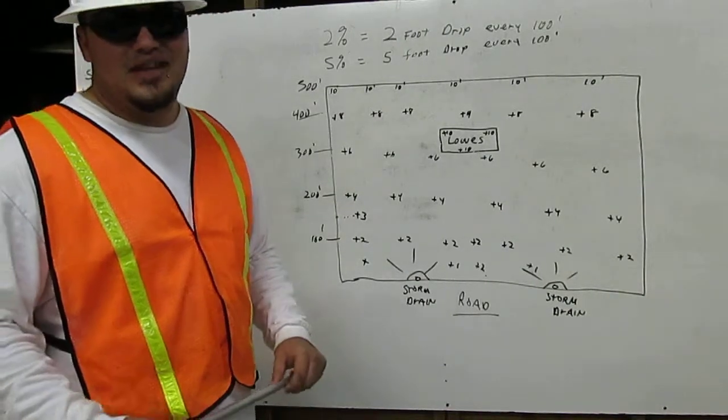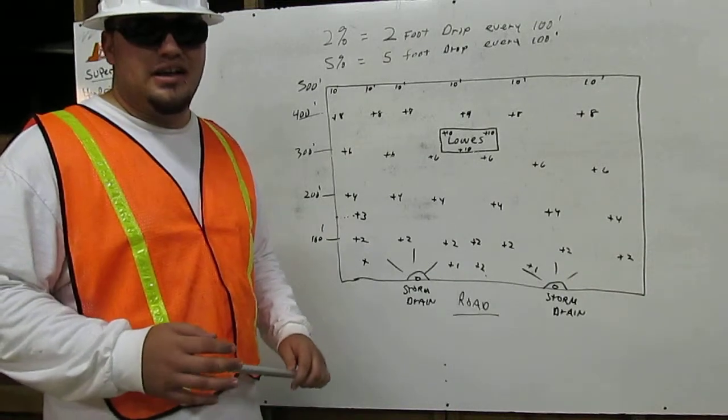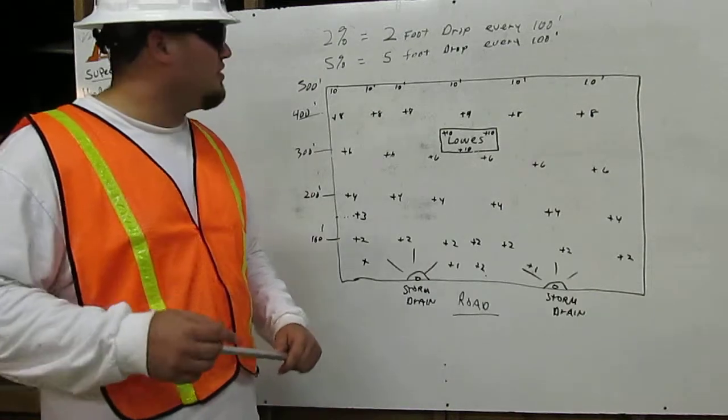Hi, I'm Joseph Hendricks and I'm construction math certified. I'm going to demonstrate to you how to use the 2% slope using a parking lot as an example. Let me show you.